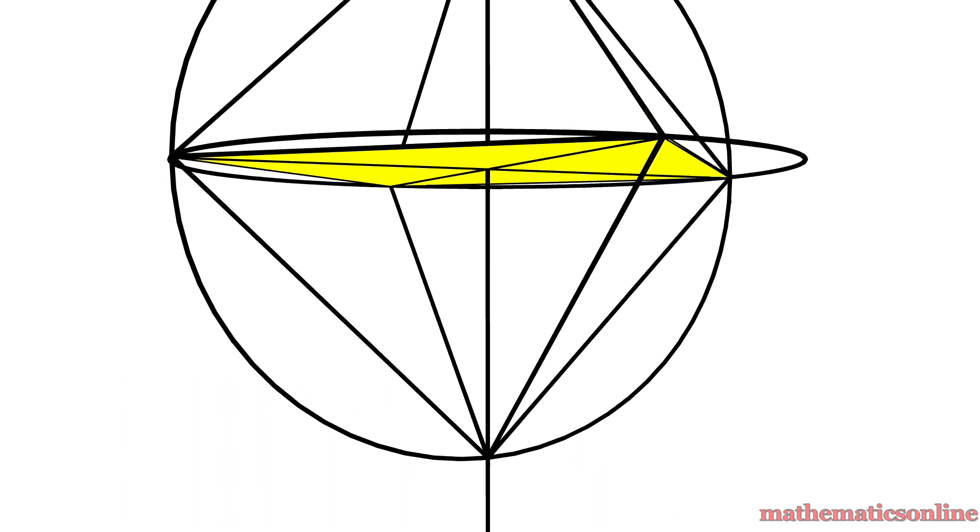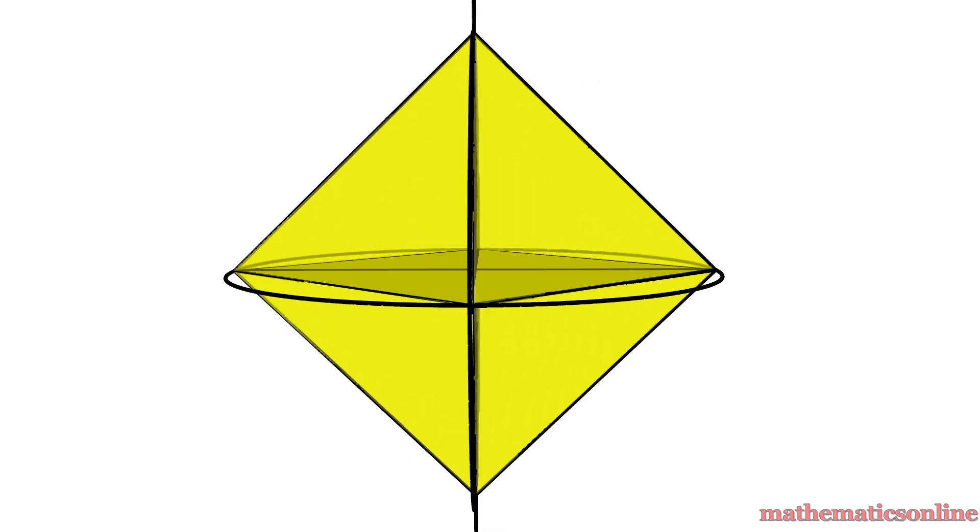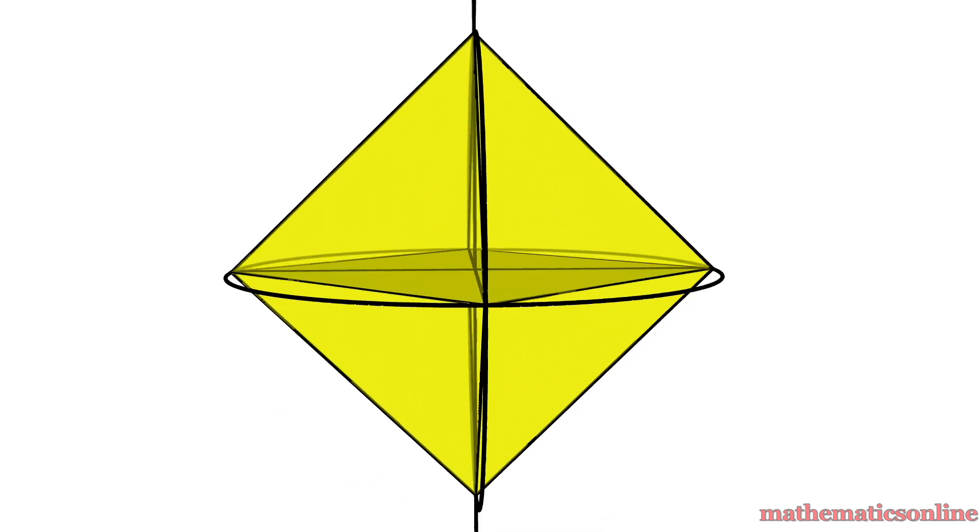This construction results in the octahedron, and that is how Euclid constructed the second platonic solid more than 2000 years ago.